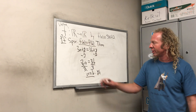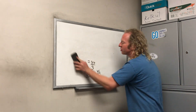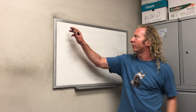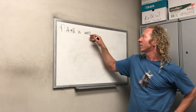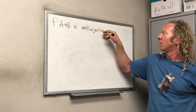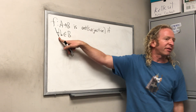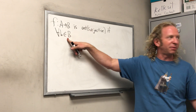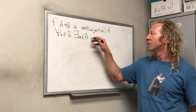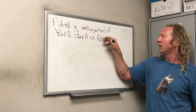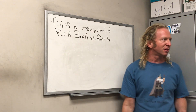Let's define onto now. A function f from A to B is onto, or surjective, if for all little b in capital B, there exists a little a in capital A such that f(a) = b. That upside-down A means 'for all,' and that backwards E means 'there exists.' This is beautiful, and I can't emphasize how important this is for higher-level math.